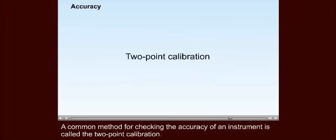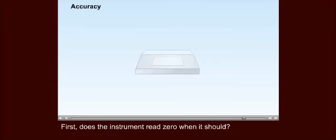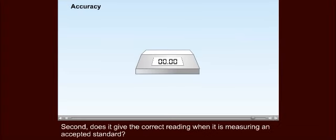A common method for checking the accuracy of an instrument is called the two-point calibration. First, does the instrument read 0 when it should? Second, does it give the correct reading when it is measuring an accepted standard?